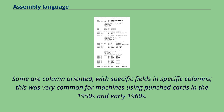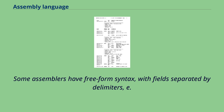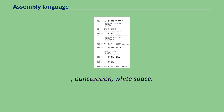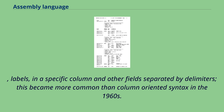Some assemblers are column-oriented, with specific fields in specific columns. This was very common for machines using punched cards in the 1950s and early 1960s. Some assemblers have freeform syntax, with fields separated by delimiters such as punctuation or white space. Some assemblers are hybrid, with labels in a specific column and other fields separated by delimiters. This became more common than column-oriented syntax in the 1960s.